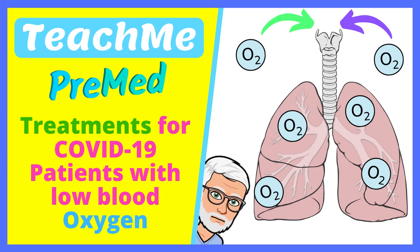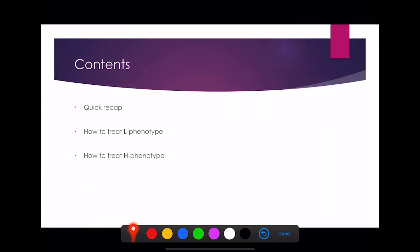In this talk, we'll go through the answers to the questions we put at the end of the last presentation, where we looked at why patients with COVID-19 infections are getting hypoxic — i.e. their blood oxygen levels are dropping. We'll quickly recap those reasons and then think about how we could treat them, discussing the L phenotype and the H phenotype of COVID-19 infection.